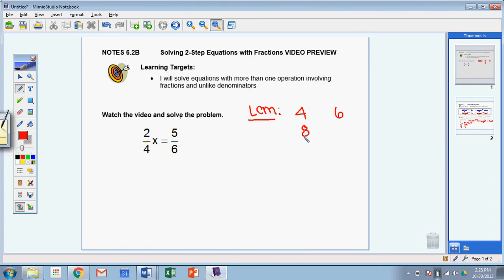So 4, 8, 12, 16, and 20. I'm going to do the same thing with 6: 6, 12. Right away I see that my least common multiple is 12.